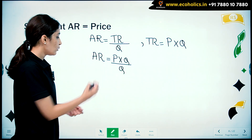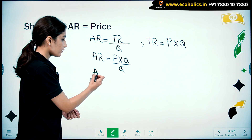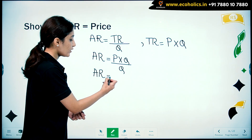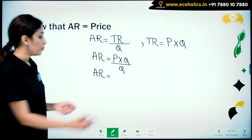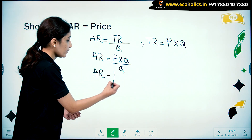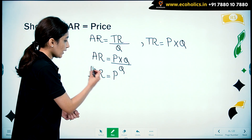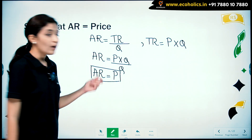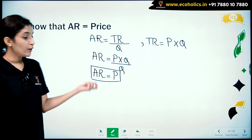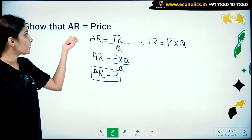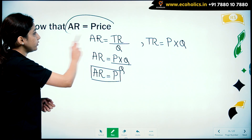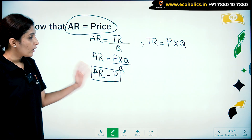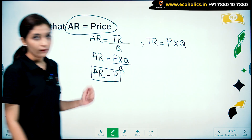Further simplifying this, we get average revenue as P, that is our price. So average revenue is equal to price, and hence we have proved this. Now coming on to another numerical.